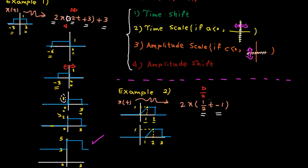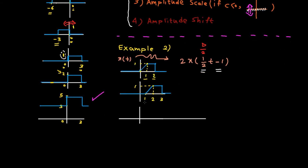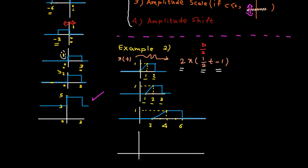Step number two: apply time scaling. The scaling factor is one half, which means we play the signal at half speed, so it takes more time to finish, and therefore we expand the signal in the time direction by a factor of two. One on the time axis goes to two, two goes to four, and three goes to six. Here is our scaled signal.